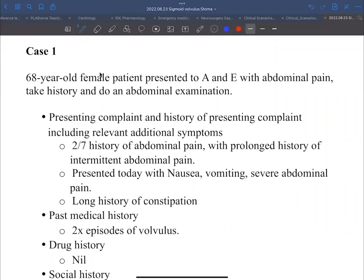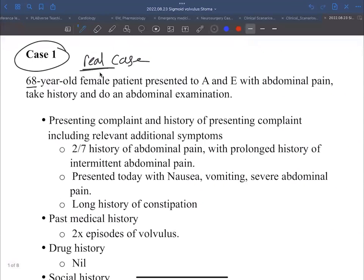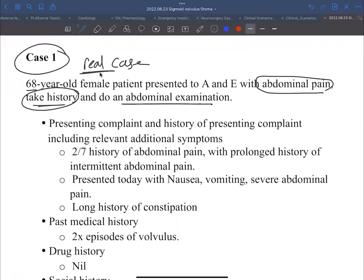So basically, we have case number one. It's a 68-year-old female patient, a real case that has been seen today in the hospital. A female patient came to A&E with abdominal pain. Your task, as a candidate, is to take history and do abdominal examination.